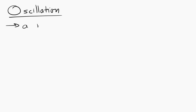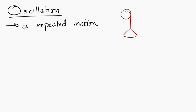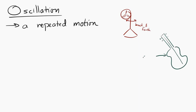Let's take a look at oscillations. An oscillation is a repeated motion. So an oscillating fan is a fan which repeats its motion back and forth. An oscillating string is a string which repeats its motion — it vibrates back and forth.